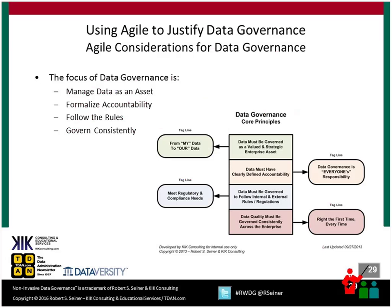Core principles of governance — managing data as an asset, formalizing accountability, following rules, and being consistent — we want to apply those to agile efforts too. Data must not be an afterthought. Even in an agile effort, we need to manage the data as an asset, formalize accountability, and follow the rules. Just because we're delivering something in an agile manner doesn't mean we don't need to follow rules associated with compliance, regulatory controls, protection, and privacy.